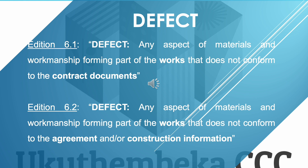Edition 6.1 defines a defect as 'any aspect of material and workmanship forming part of the works that does not conform to the contract documents.' Edition 6.2 reads: 'any aspect of materials and workmanship forming part of the works that does not conform to the agreement and/or other construction information.' The word 'agreement' has been added in 6.2 because the contract documents definition was deleted, and it automatically includes drawings and price documents through the use of 'agreement.'